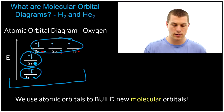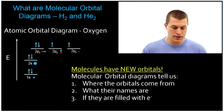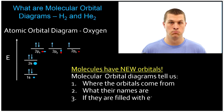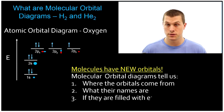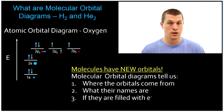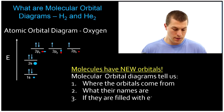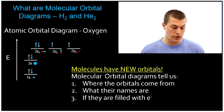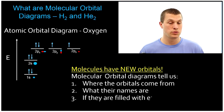What do molecular orbital diagrams do for us? Well, they tell us where our molecular orbitals come from — they come from the 1s, or the 2s, or the 2p atomic orbitals. So we're going to build up our molecular orbitals with atomic orbitals, and the molecular orbitals will tell us where they came from. They'll also tell us what the names of the molecular orbitals are. Over in atomic orbitals we have names like 1s, 2s, and 2p; for molecular orbitals you have slightly different names, which we'll get to in a second.